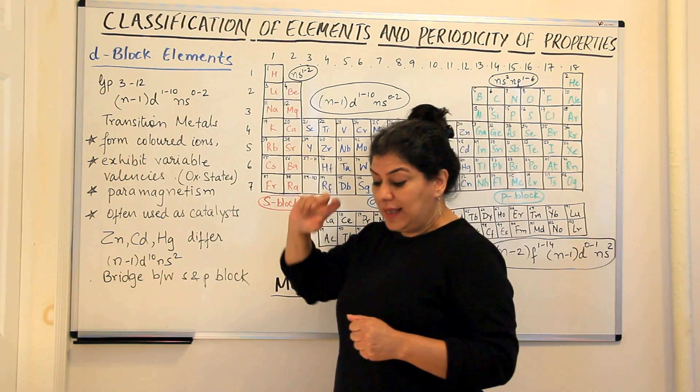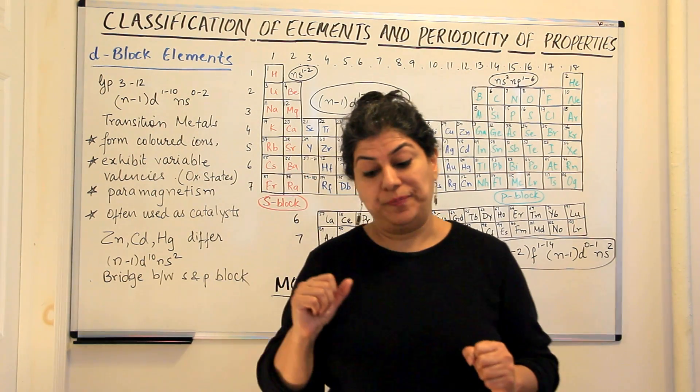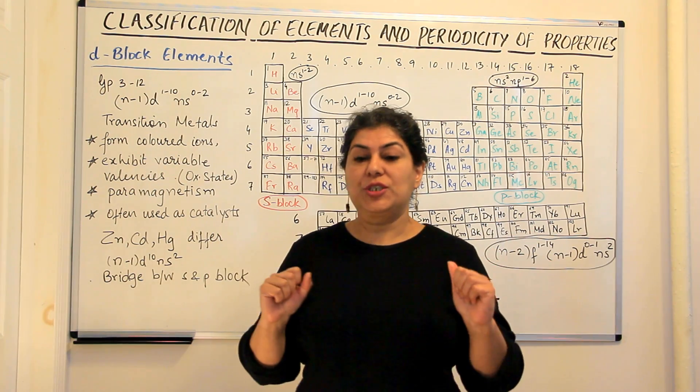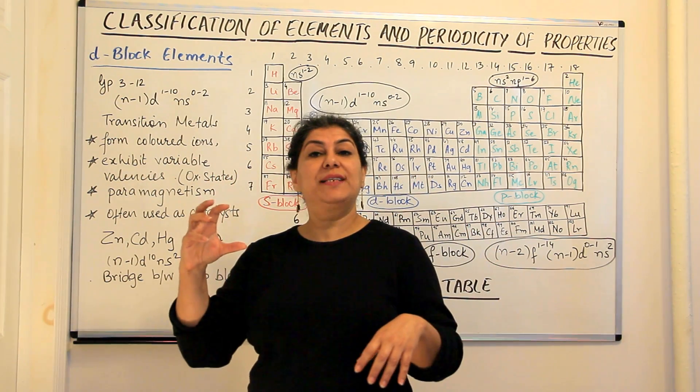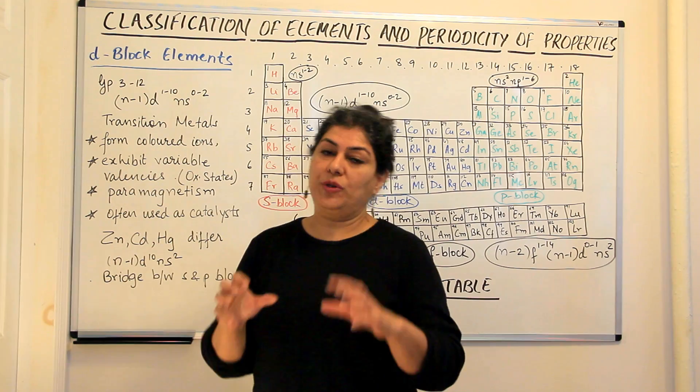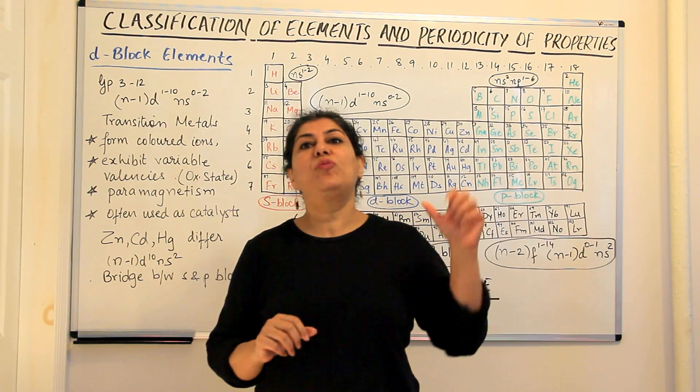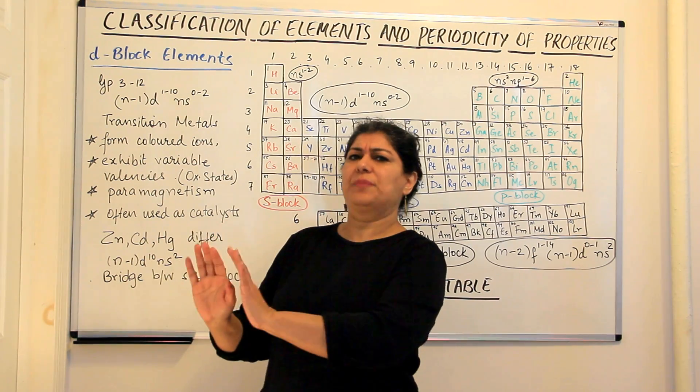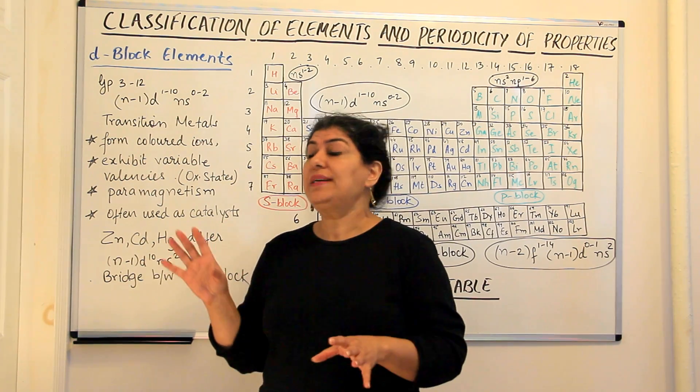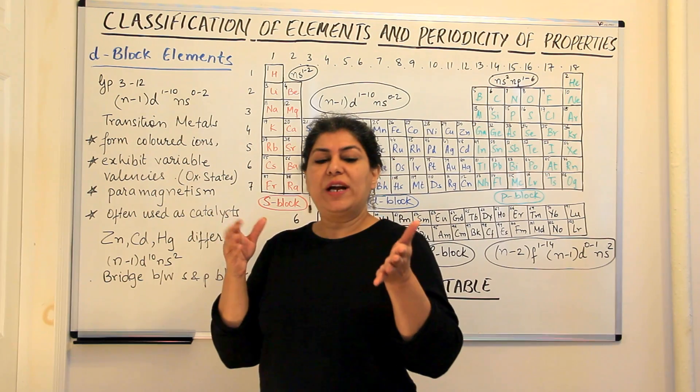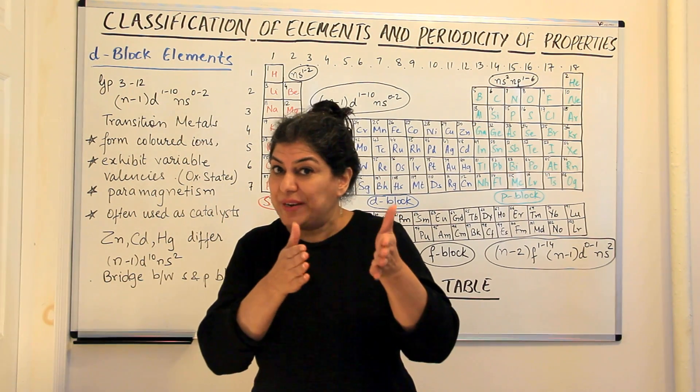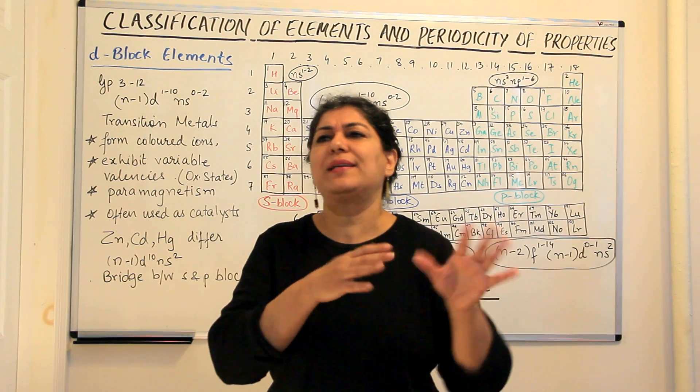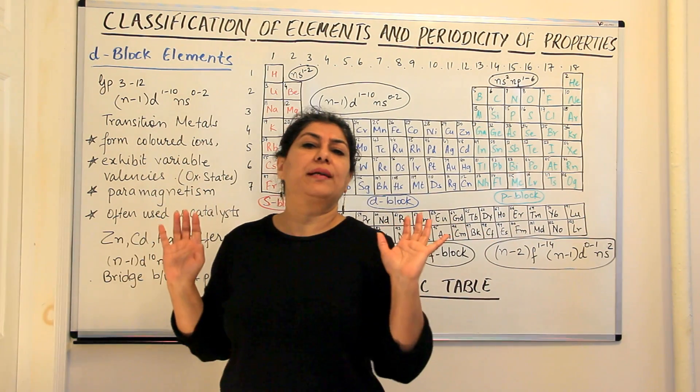These elements are paramagnetic in nature. Magnetism is of three types mainly. Substances are either diamagnetic or they are paramagnetic or they are ferromagnetic. Diamagnetic substances are those which are slightly repelled by a magnet. Paramagnetic substances are those which are attracted by the magnet. In the presence of a magnet, they are attracted by it but as soon as you remove the magnet, they just return to being non-magnetic in nature.